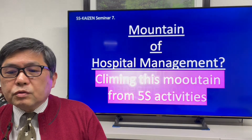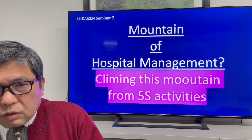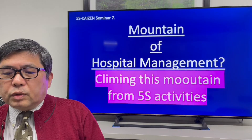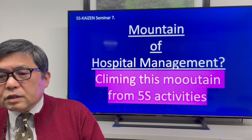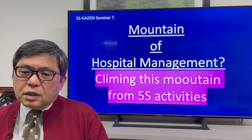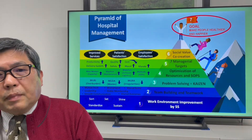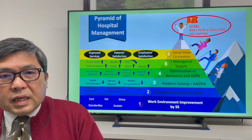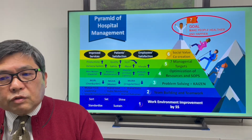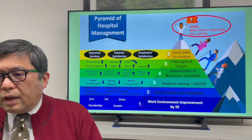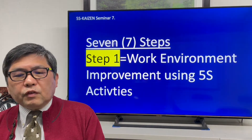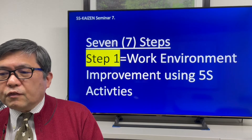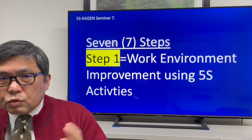The mountain of hospital management is already well known among you, as this schematic drawing appears in some textbooks. We have to climb this particular mountain of hospital management from the bottom. The bottom is 5S activity. This is the mountain — or pyramid — of hospital management. It has seven layers, seven steps. In today's session, we want to make a quick review of each step. Step one is work environment improvement: the physical environment of the work venue should be improved using 5S activities.